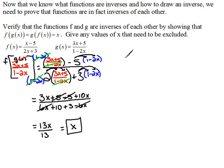Now we need to go back and do the second composition just to prove it — you absolutely have to go through both ways. Sometimes it could work one way but not the other, so you have to be careful. So I'm doing g of f of x. f of x, remember, was (x − 5) over (2x + 3).